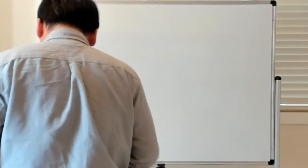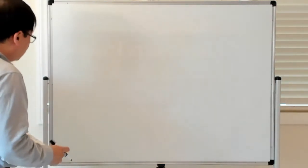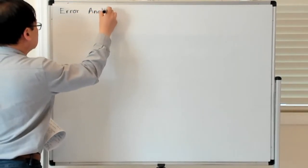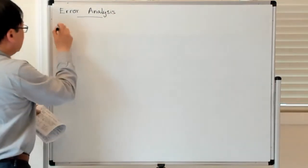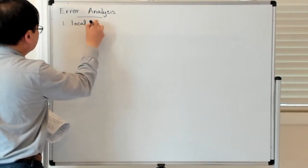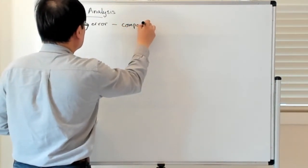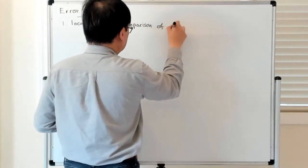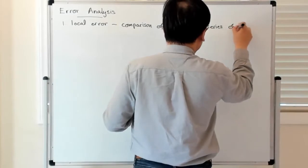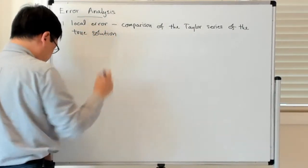Alright, let me say a little bit about how to do error analysis of a numerical method for the solution of initial value problems. It's broken down into sort of two parts. The first has to do with this notion of local error. The local error is a comparison of the Taylor series of the true solution and the numerical approximation.